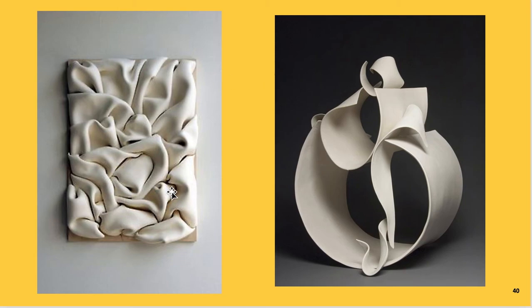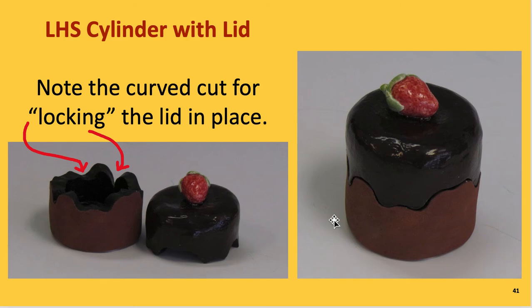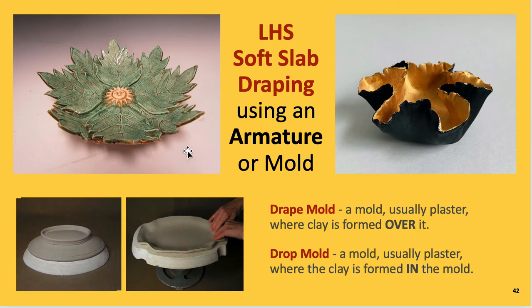This is a wall piece — manipulating a soft slab. And this is a really cool abstract sculpture at a very high difficulty level. Another project we used to do is a small cylinder with a lid — the cut edge that looks like frosting dripping locks the lid in place so it doesn't slide off. These drapings were made by pressing slabs into a bowl, with four slabs on top and four underneath, and a little sun mold pressed into the center.